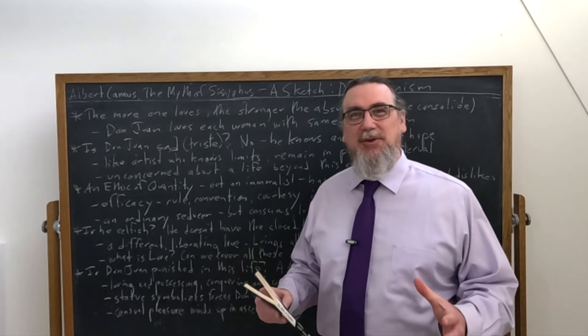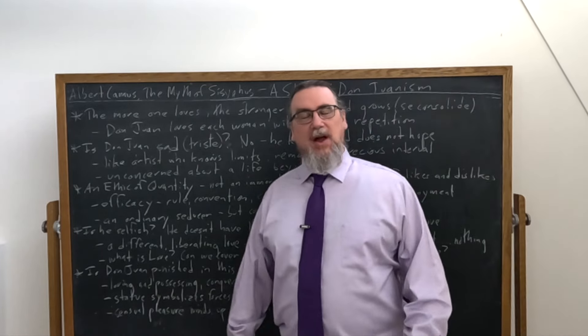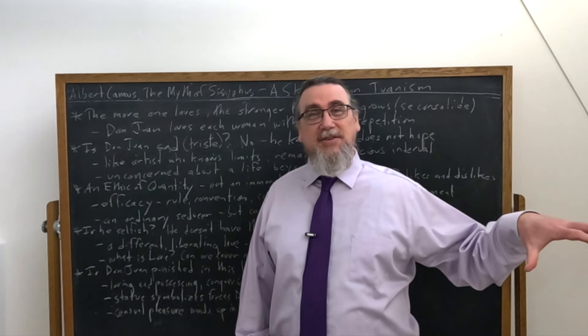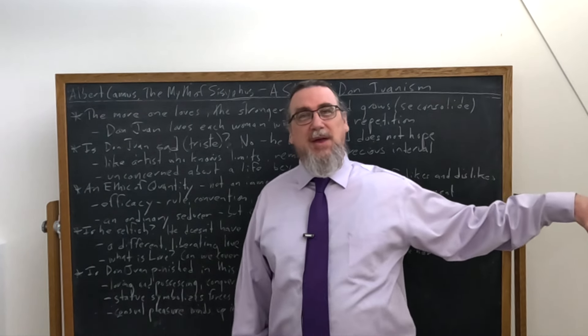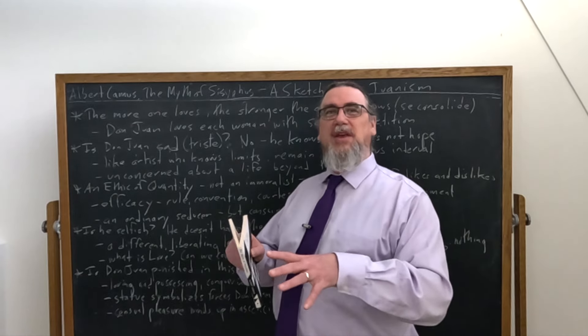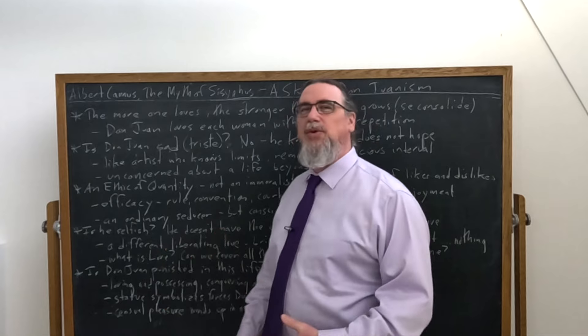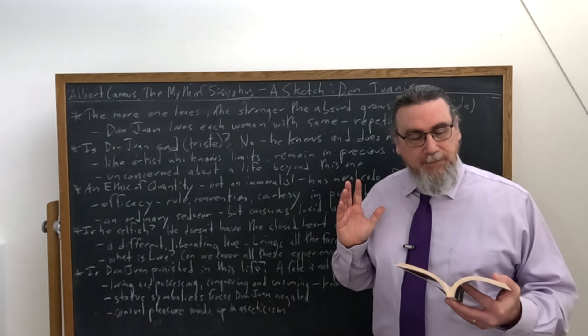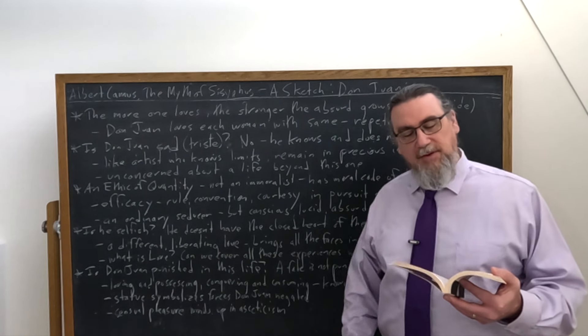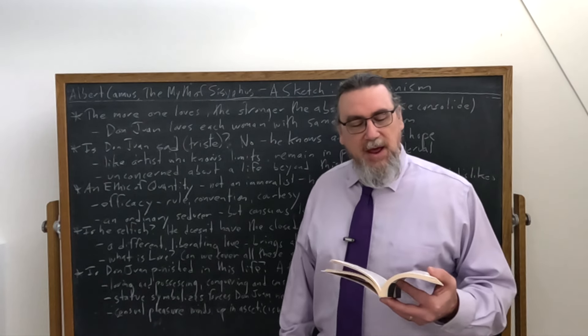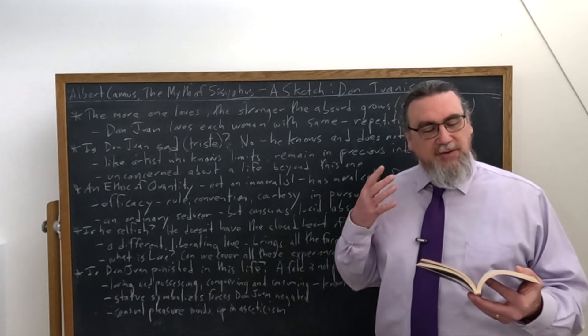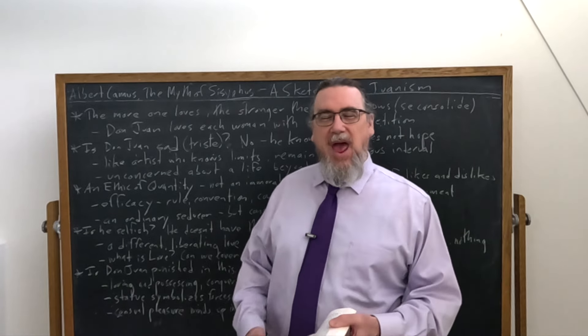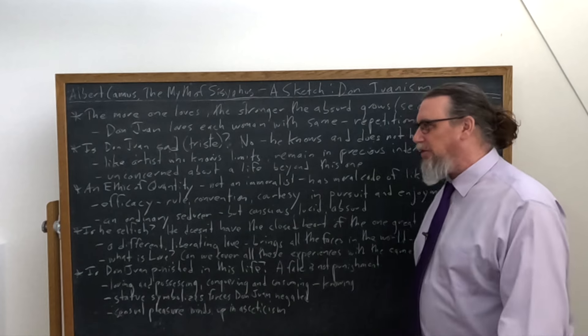A seducer who has become lucid does not change for that. They don't cease being a seducer. They're not like, oh, I've realized that seduction, sexuality, desire, all this play, it's just, to go back to it, vanity of vanities, all is vanities. No, that's not where he goes with this. He knows what he's doing. He knows the limited value of it, but he's going to pursue it anyway. So he goes on and he says, it can be said at the same time. And I really love this formula. Nothing has changed and everything is transformed. And then he goes on to say what Don Juan realizes in action is the ethics of quantity, or rather an ethics of quantity, because there are many and multiple ones.